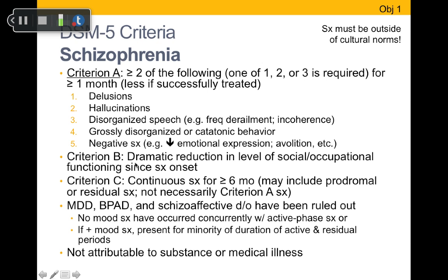Criterion B requires a dramatic reduction in level of social and occupational functioning since symptom onset. Criterion C requires continuous symptoms for at least six months. While Criterion A symptoms must occur for at least a month, Criterion C indicates something has been wrong for longer than just that acute episode. Most patients have low-grade symptoms for a while before something severe enough happens to prompt hospitalization.